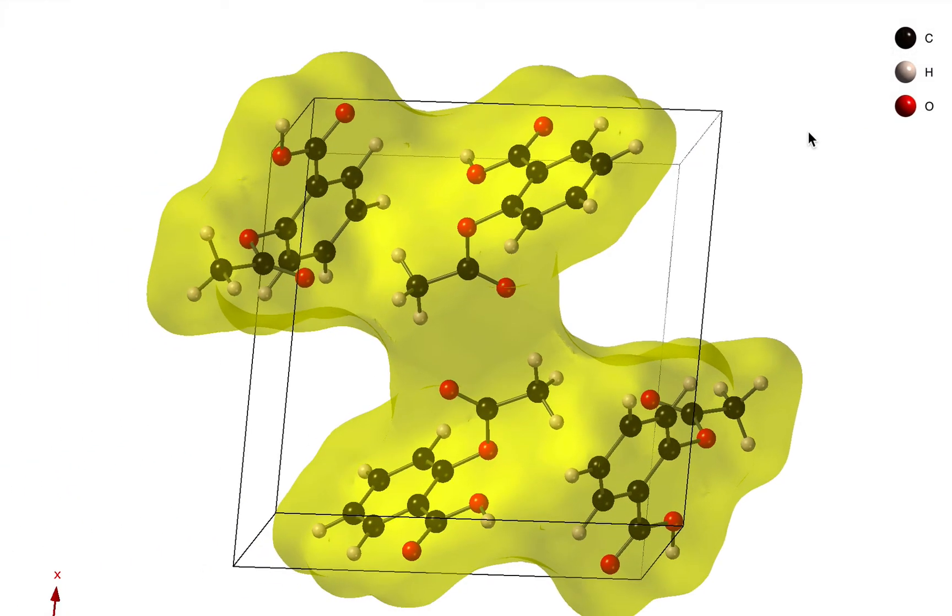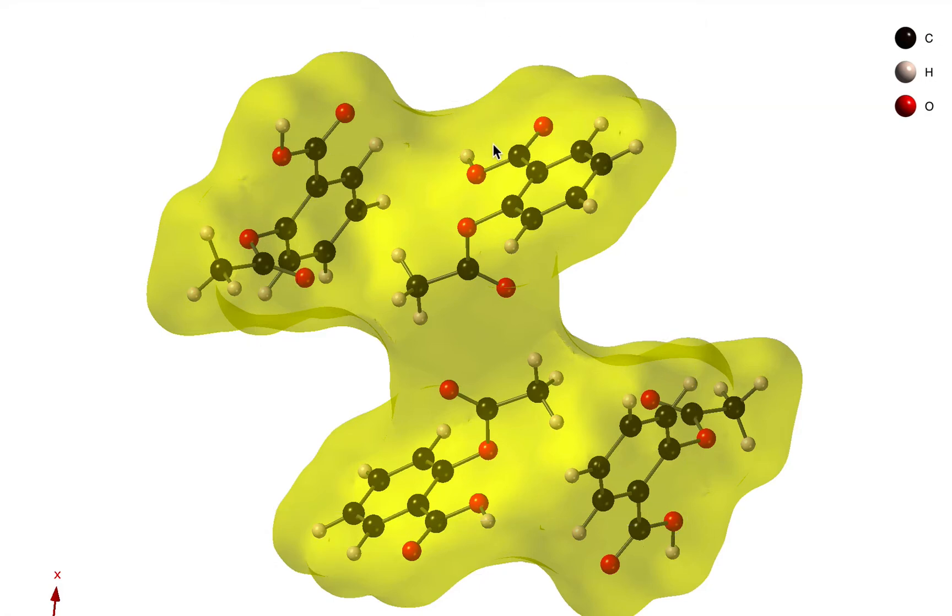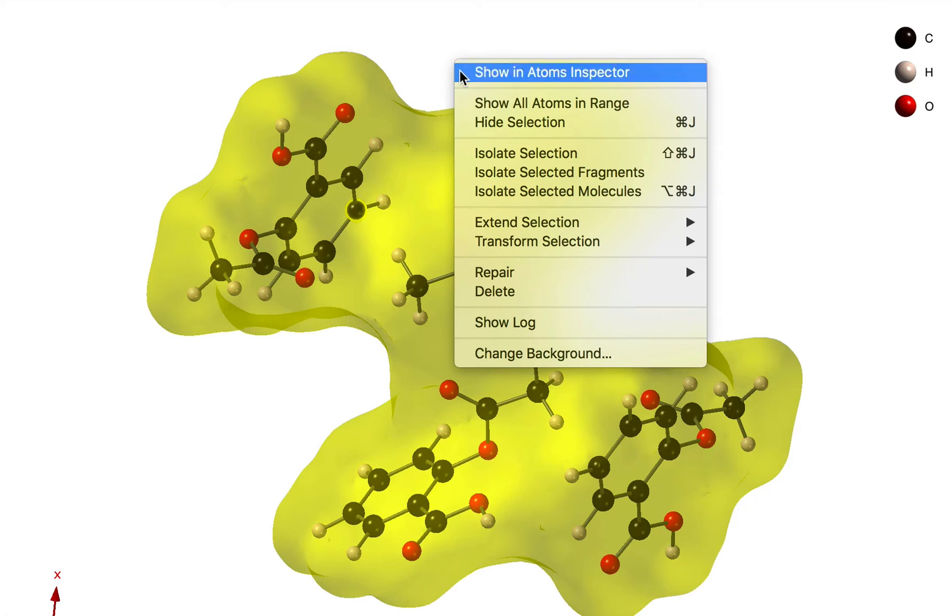Now this is for a crystal structure. Let's say that we actually want to just show a single molecule and the shape of that single molecule. So what I'm going to do is hide the unit cell and just click on one atom in the molecule that we want to focus on. We can right click and we can do isolate selected molecules.